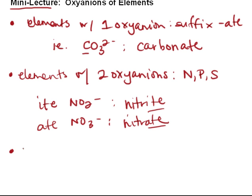There are also elements with more than two oxyanions. You'll see this most commonly with the halogens: chlorine, bromine, and iodine.